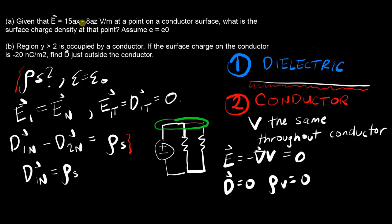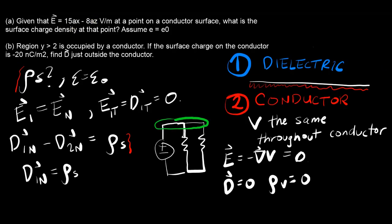The tricky thing is we know that the electric field is this at that point on the conductor's surface. So that must mean that if the tangential component at the surface is zero, then this whole thing, both in the x and z direction, must be normal to the conductor surface.